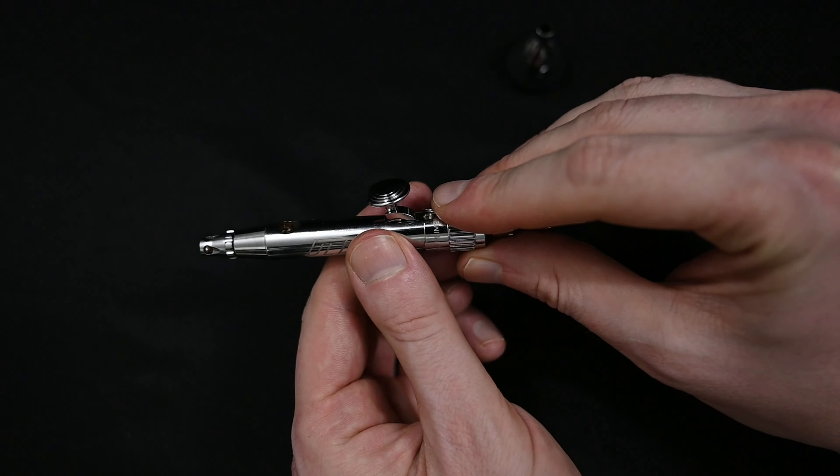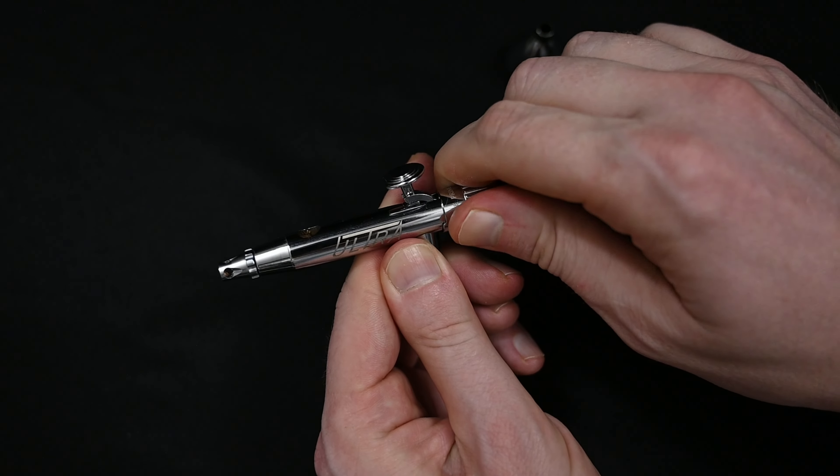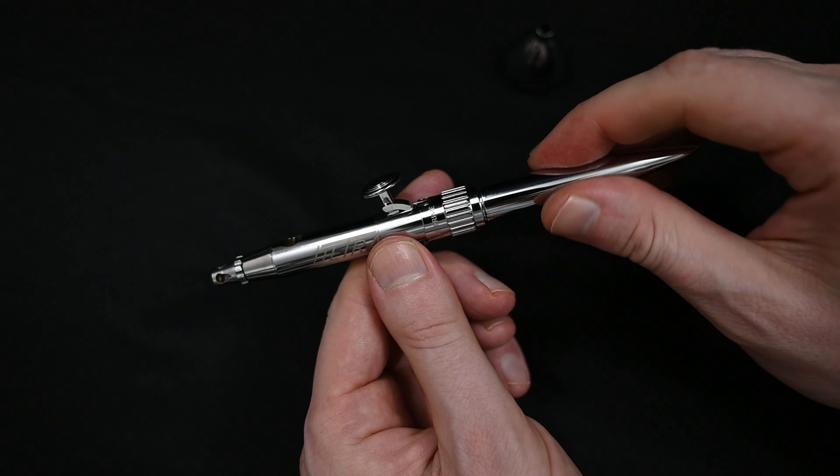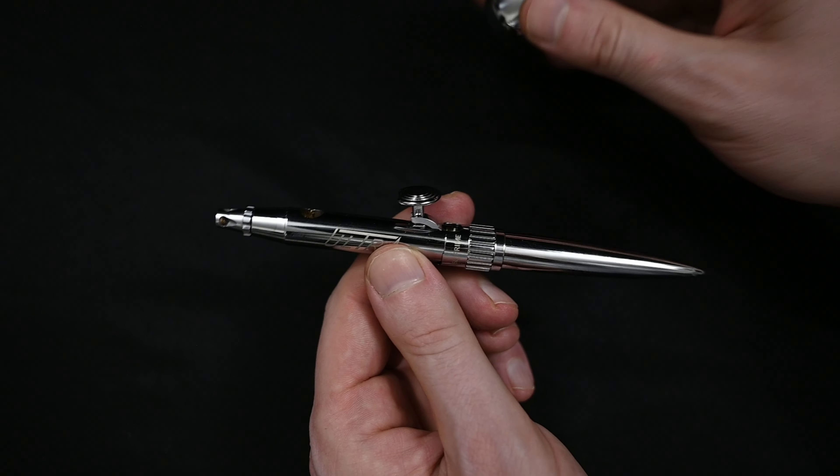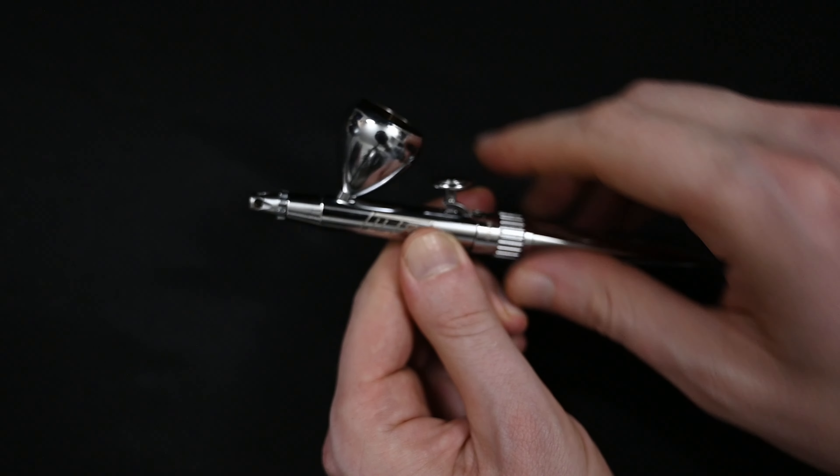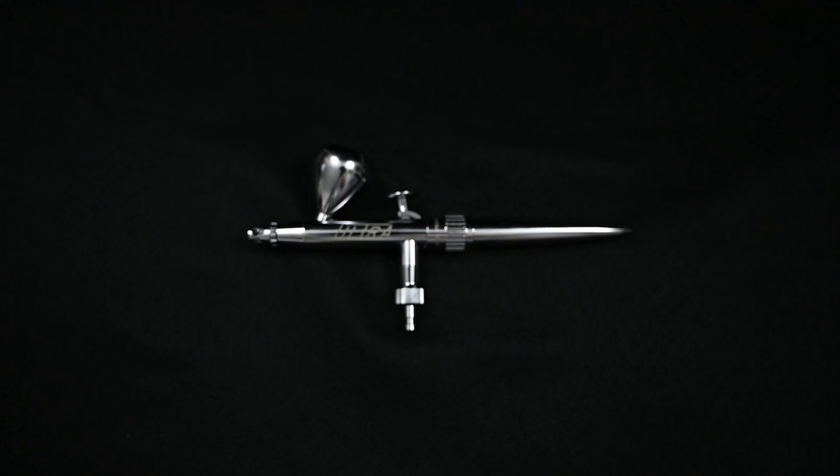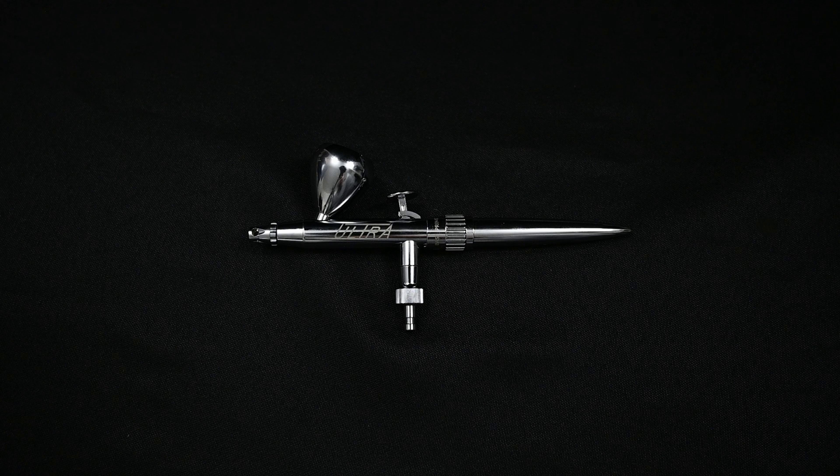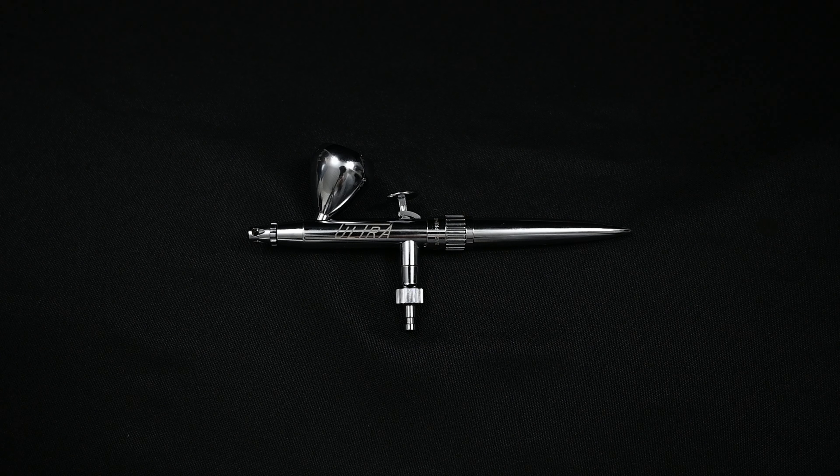And then just put on that guide, that chucking nut, and insert the needle. When you insert the needle, you don't want to use any pressure on it. You just want to insert it until you feel it make contact with the front of the nozzle. If you use some force and really kind of press it in, you could damage the nozzle. So just a very light amount of pressure until you feel it make contact with the front of the airbrush, and then it's set. And that's it. It's just one of the easiest airbrushes to break down and put back together.